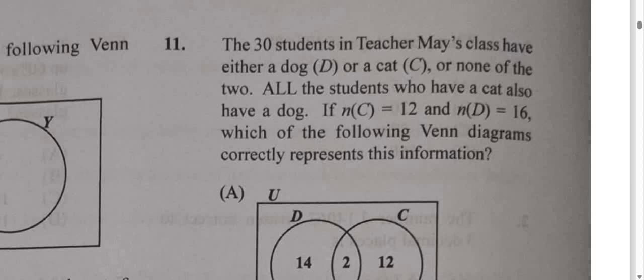Okay, so now we're looking at question number 11. We're told that 30 students in Teacher May's class have either a dog or a cat, or none of the two. All the students who have a cat also have a dog. If n(C) = 12 and n(D) = 16, which of the following Venn diagrams correctly represents this information?